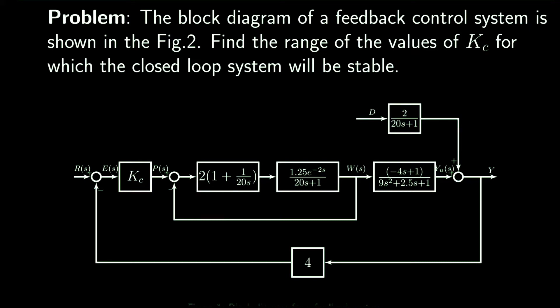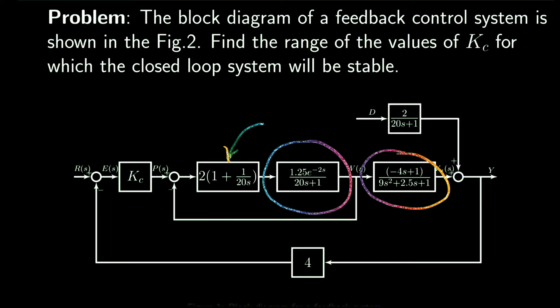This is an example where we use the Routh stability criteria to determine the range of controller parameters to stabilize a process. This is typical for a cascade control system. The primary process has second-order dynamics with a right half plane zero, and we have a first-order process with a time delay. For this case we have a PI controller for the secondary loop and a proportional controller for the primary loop. The objective is to determine the range of the controller gain for which the process will be stable.